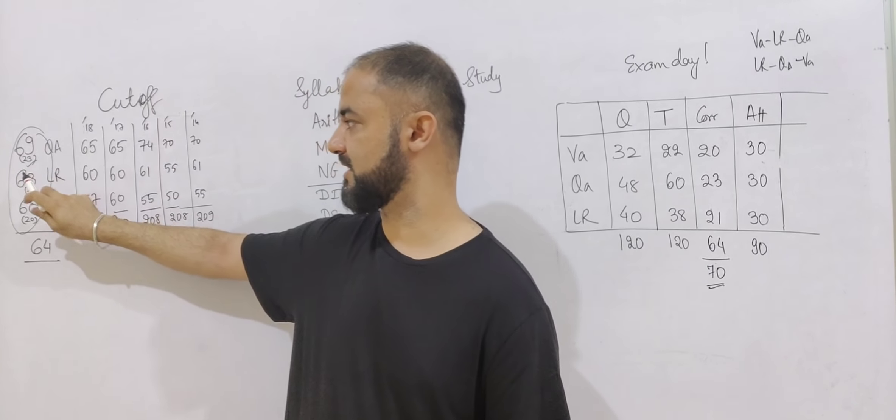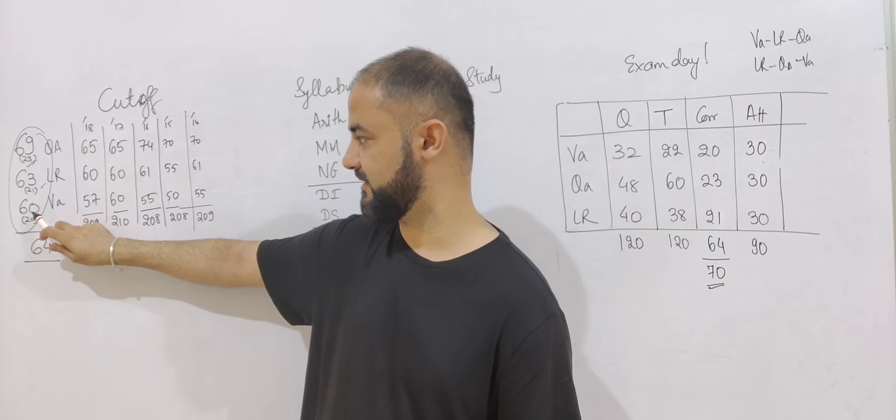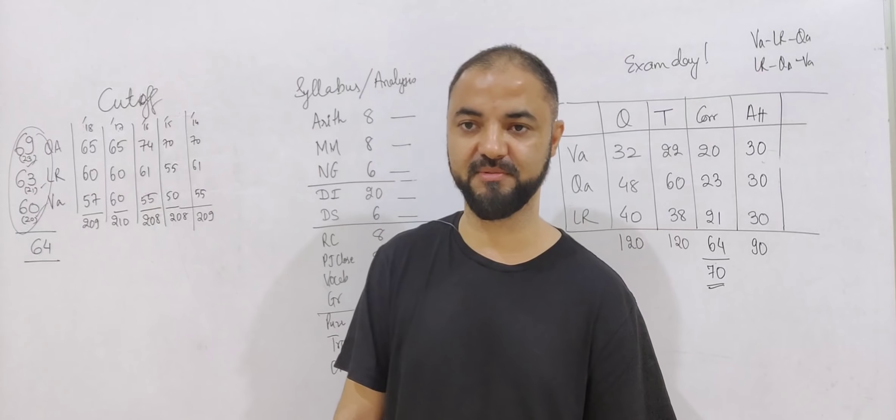Which means 23 questions correct in quant, 21 correct in logic, and 20 correct in verbal. That's going to be my target for this year's NMAT paper.